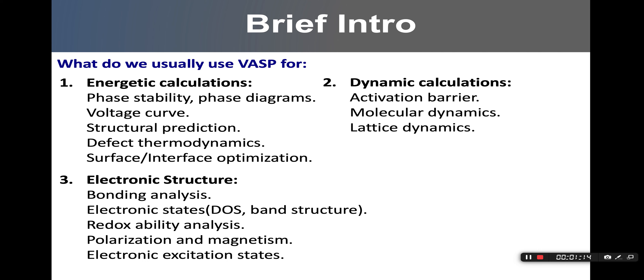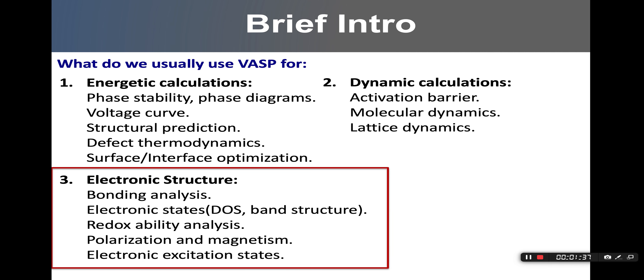If you watched my first video, you'll remember the slide where I gave an overview of the typical types of calculations we usually use VASP to do. Those include energetic calculations, dynamic calculations, and electronic structure calculations. Electronic structure calculations are something unique to quantum-based methods like density functional theory. Compared to force-field molecular dynamics or finite element analysis, DFT not only gives you the total energy of a system, but also the electronic states of all electrons in the material.